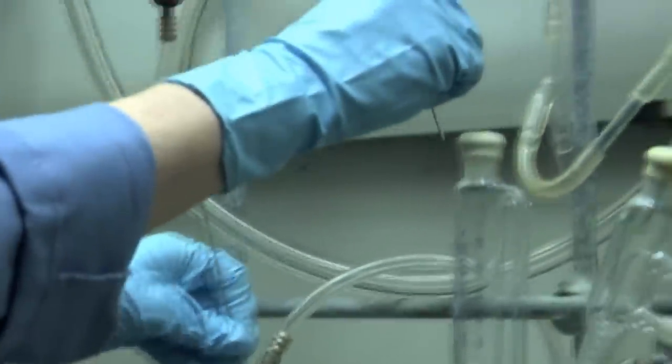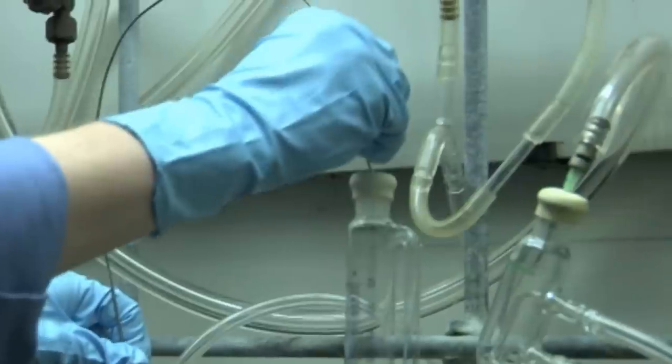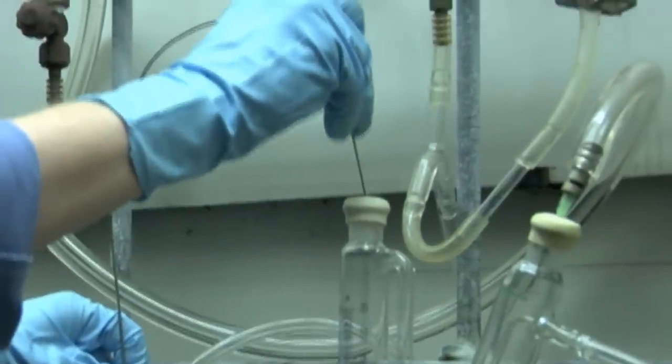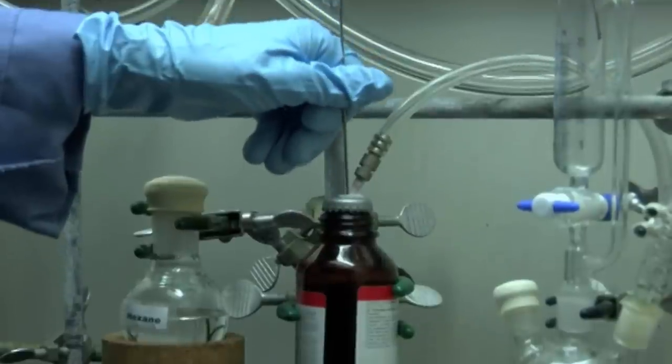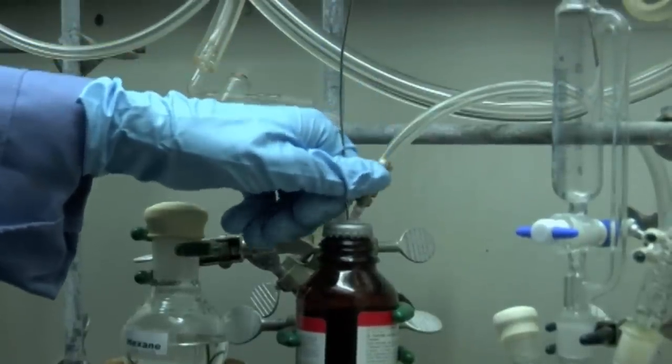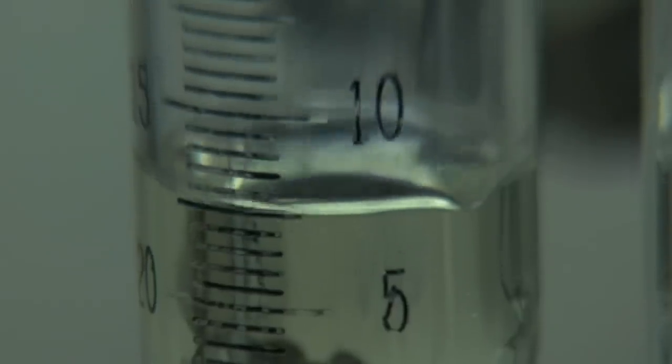Next, insert the other end of the double tip needle through the septum of the calibrated addition funnel attached to the reaction apparatus. This apparatus must be equipped with a gas line to a bubbler. Now, submerge the needle in the liquid-filled SureSeal reagent bottle and transfer the desired volume.